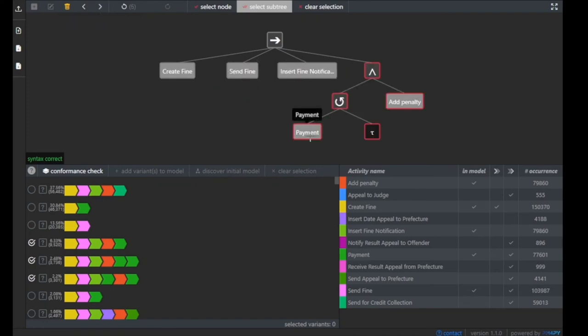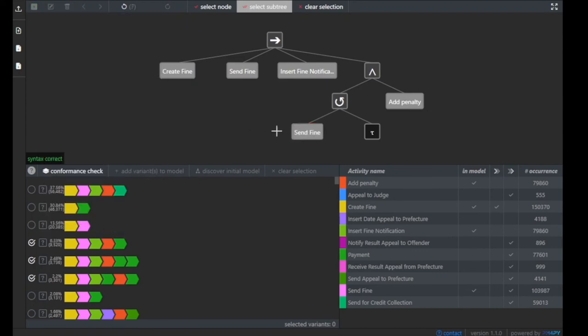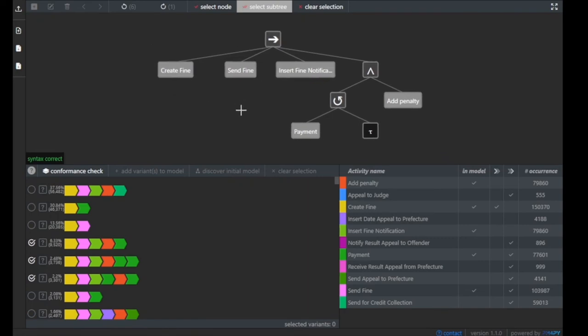For example, you can select this subtree and relocate the order within the process model. You could also click on a single activity and change the name of the activity. For example, instead of payment we could say that this is send fine. Of course, there are redo and undo functionality also included in the process editor. Let's assume this is the initial process model that the user wants to proceed further with.